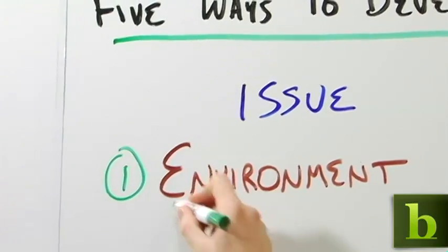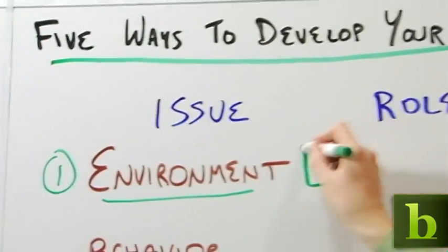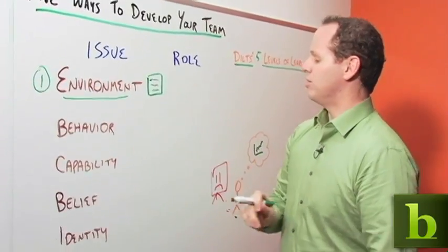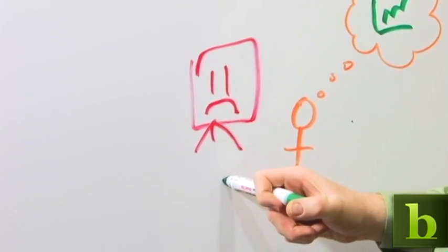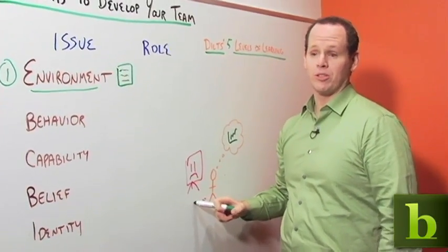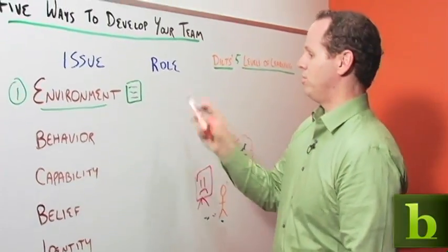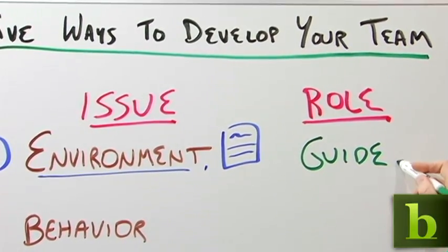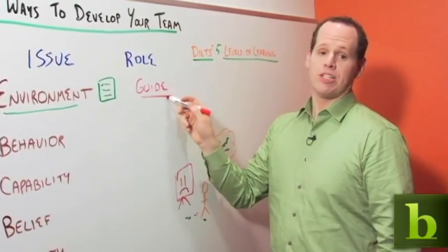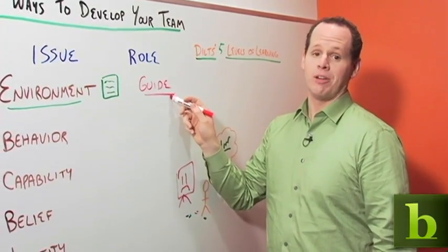The first issue is the issue of environment. Environment is what's going on around the person. So let's say, for example, that this employee has a job that never lets him give presentations until he's in front of customers. That's not an environment that supports learning. In that case, your role is the role of a guide. You want to guide that person to environments where he can develop the skill. Maybe you suggest Toastmasters, or maybe help him get some on-the-job training.